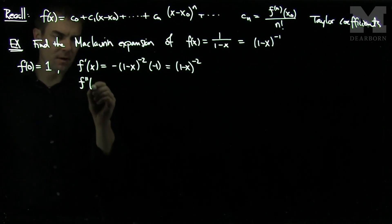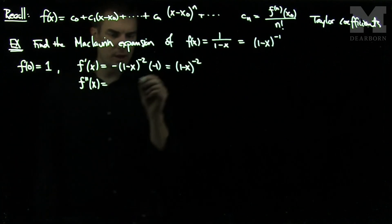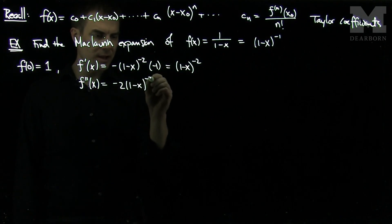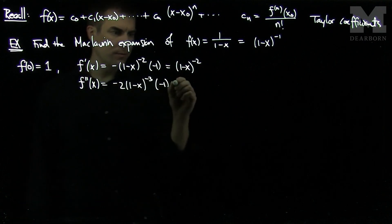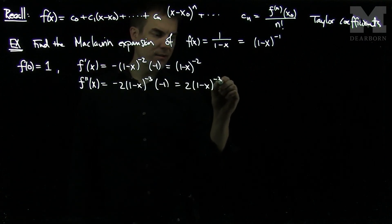f double prime of x will be negative 2 times (1 minus x) to the negative 3 times negative 1 by the chain rule, which is 2 times (1 minus x) to the negative 3.